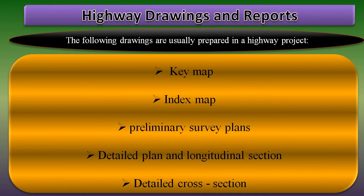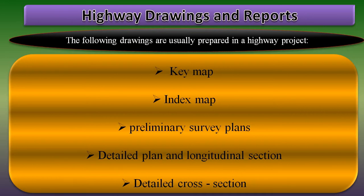The detailed plan is drawn with alignment and boundaries, contours at an interval of 1 to 2 meters. The longitudinal section should be drawn to the same horizontal scale as in the detailed plan. The vertical scale may be enlarged 10 times of the longitudinal scale.